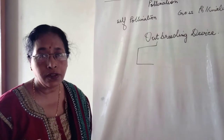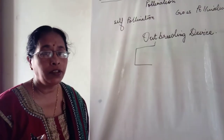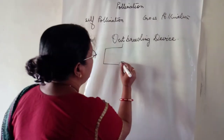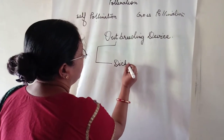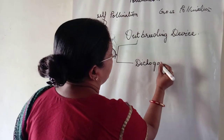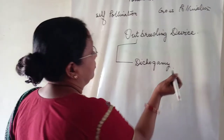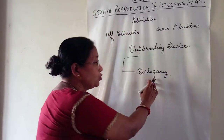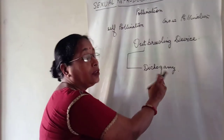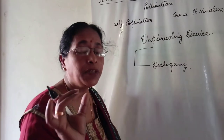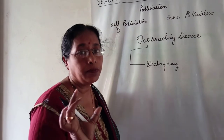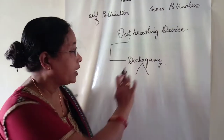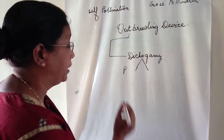One mechanism is that the plant should be unisexual. Another mechanism is dichogamy, which refers to a condition where the anther and the pistil mature at different times to avoid self-pollination. Dichogamy is of two types.